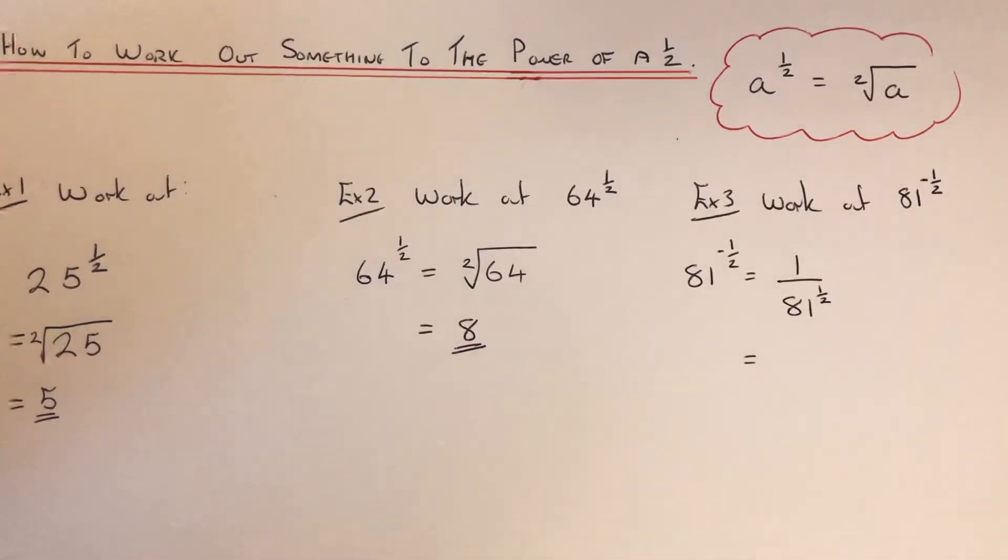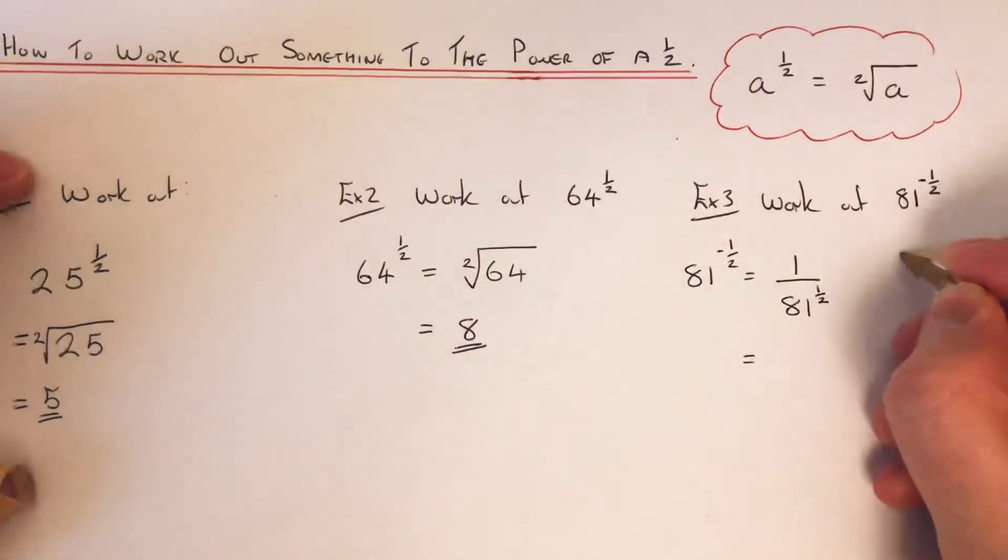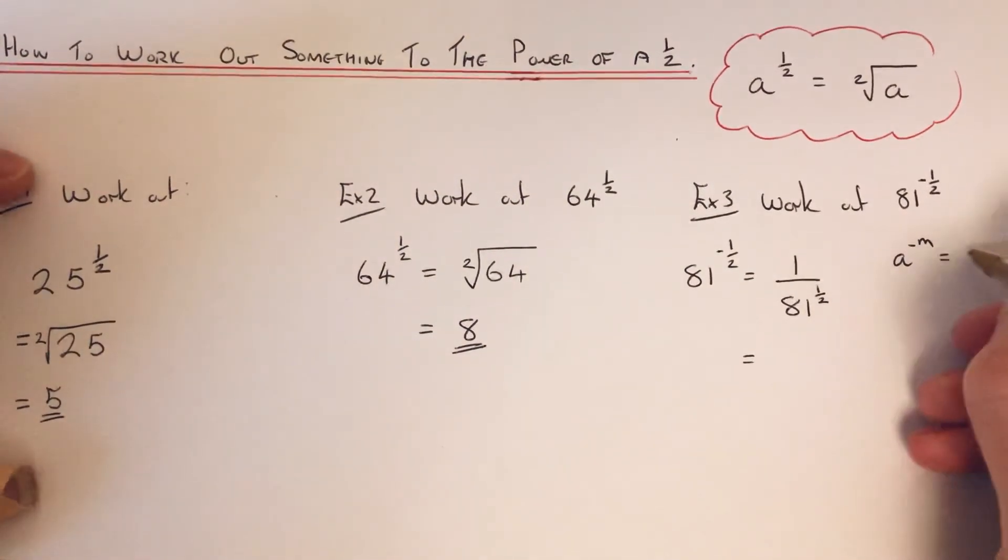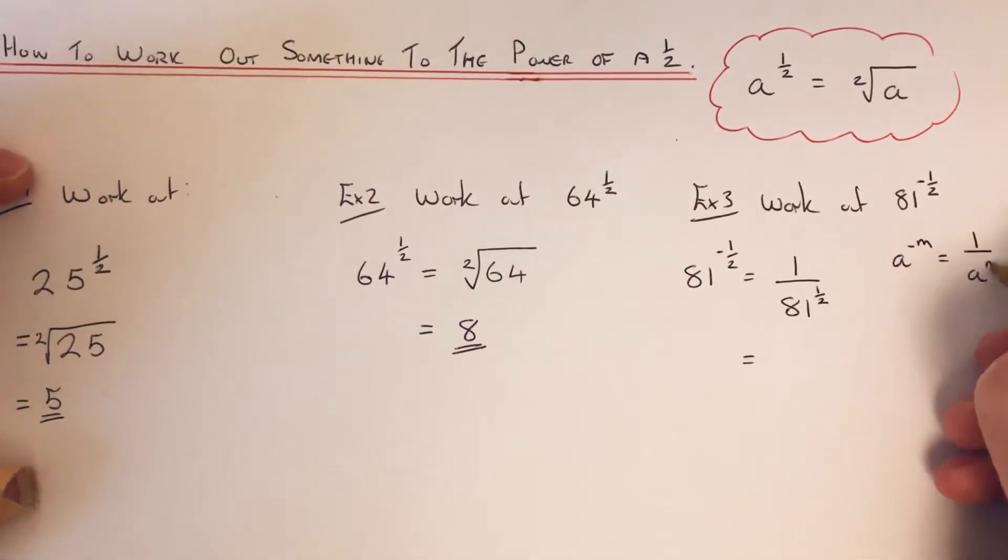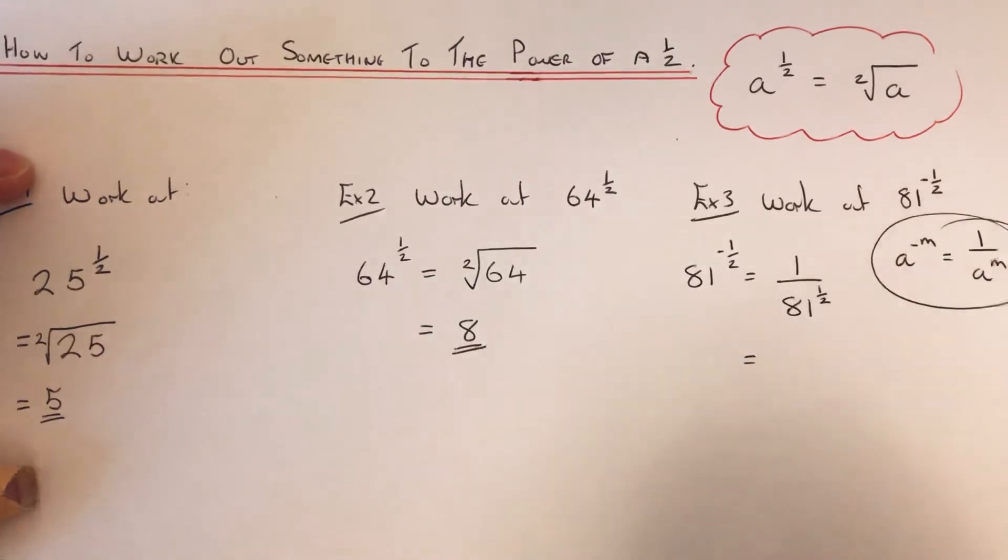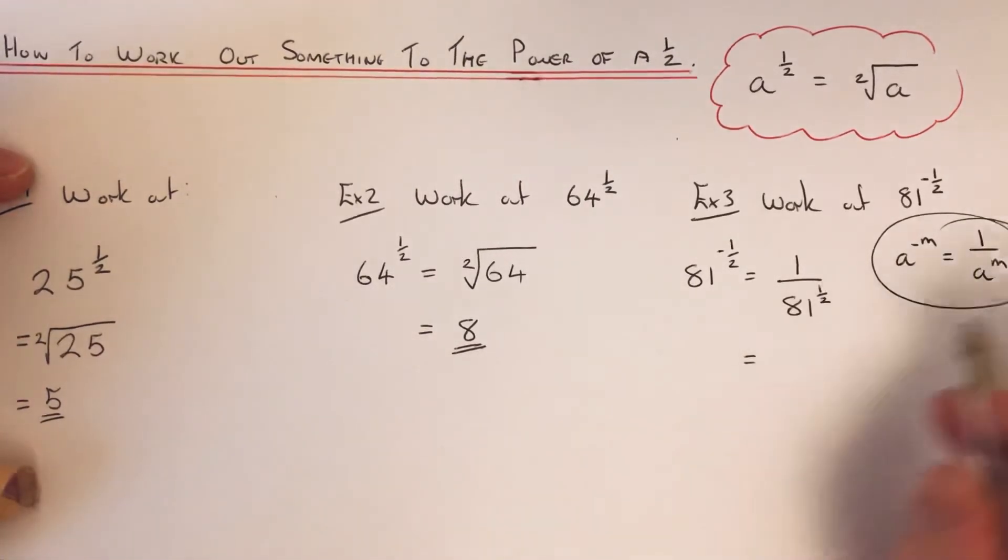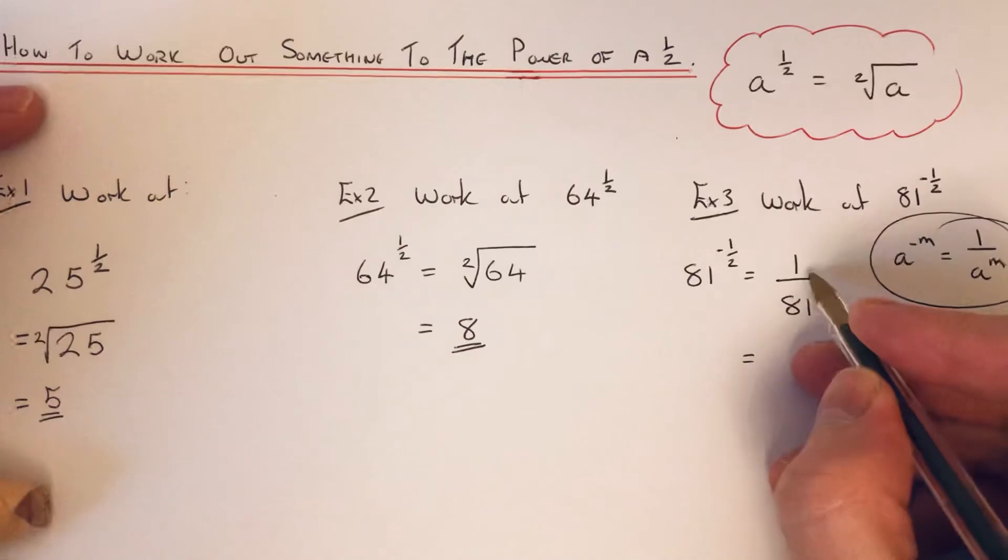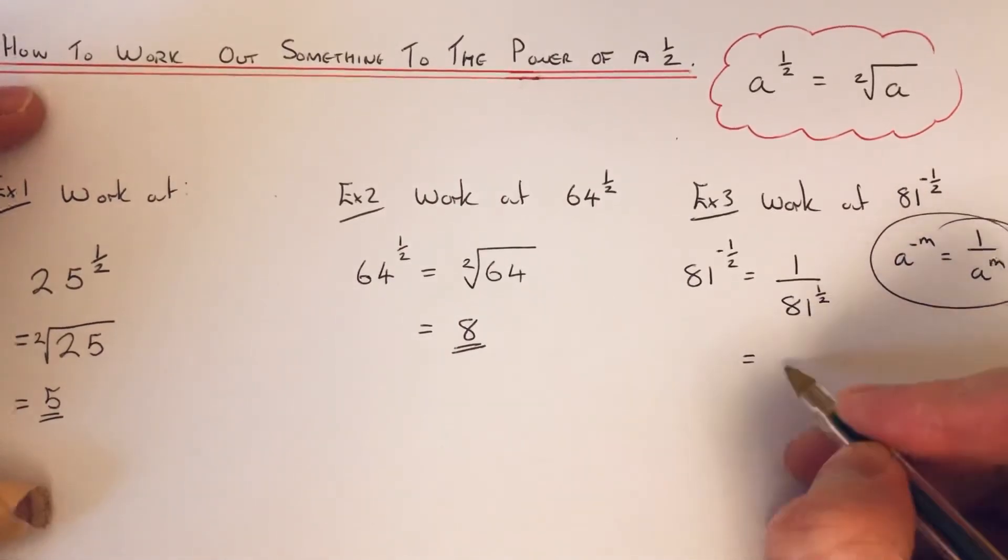That is the negative power rule, which is a to the power minus m equals 1 over a to the m. So once you've applied your negative power rule, you can actually work out 81 to the power of a half by taking the square root.